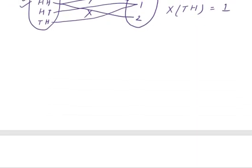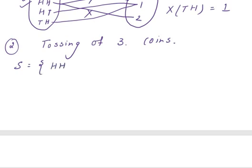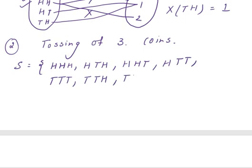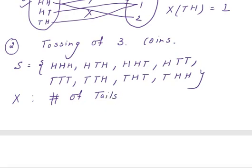Now consider another experiment: tossing three coins. The corresponding sample space has eight possible outcomes: HHH, HTH, HHT, HTT, TTT, TTH, THT, and THH. If we define capital X as the number of tails, then X is a random variable denoting the number of tails for this experiment.